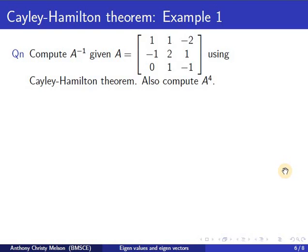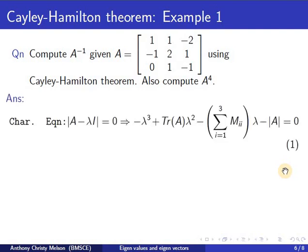To illustrate the application of the Cayley-Hamilton theorem, I have chosen this example. We compute A inverse and A power 4 using Cayley-Hamilton theorem. To achieve this, first we have to find a characteristic equation, which is given by equation 1.